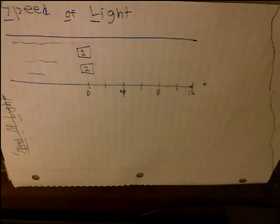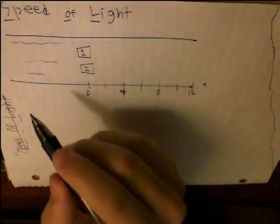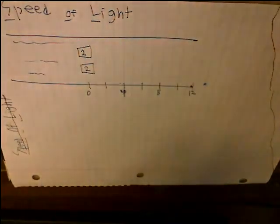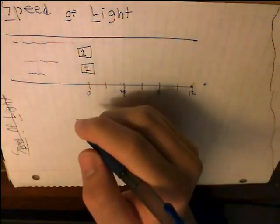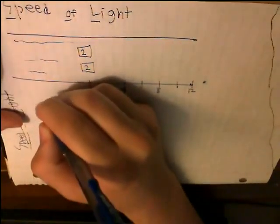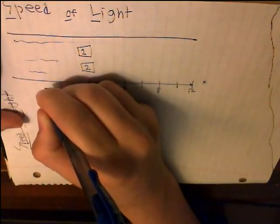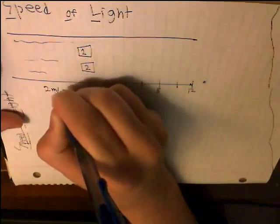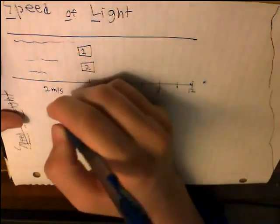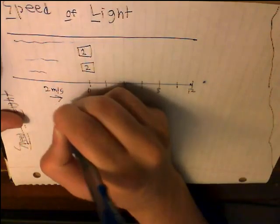So imagine time as like a river. Yes, that's a river. Don't judge me. Okay, and let's say the speed of light is approximately, we'll say, two meters per second. And it's always going this way, to the right.